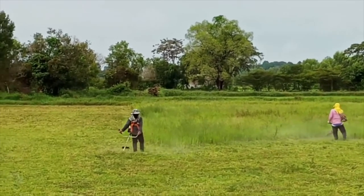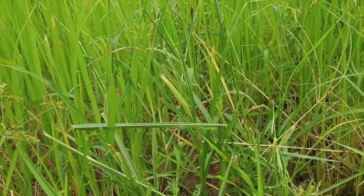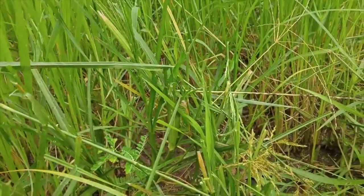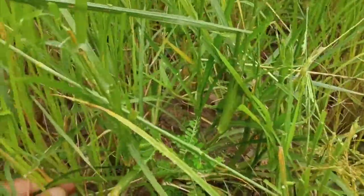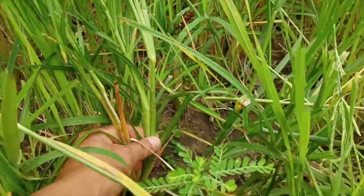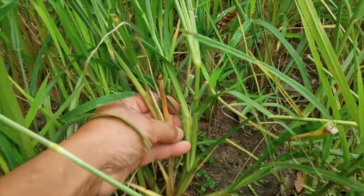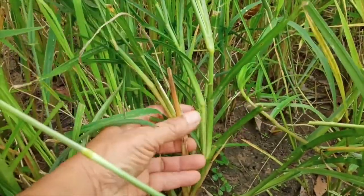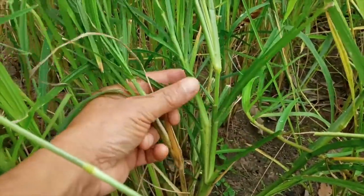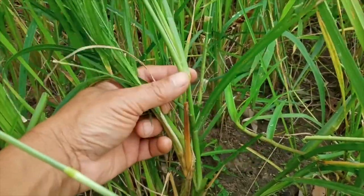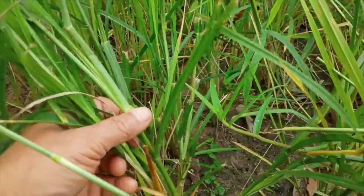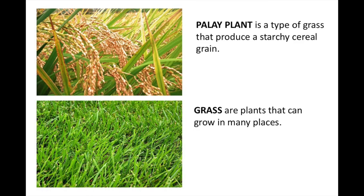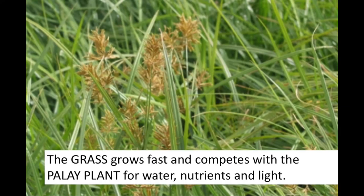Palay plant and grass belong to the same species of plants. Palay plants produce a starchy cereal grain while grasses can grow in many places. Palay does not grow well when it has to compete with grass for the resources that it needs. Grass can grow fast and in abundance, resulting in poor growth and harvest of palay. Organisms may compete for food, sunshine, space, water, and other things they need for survival. Each organism in this kind of relationship is called a competitor.